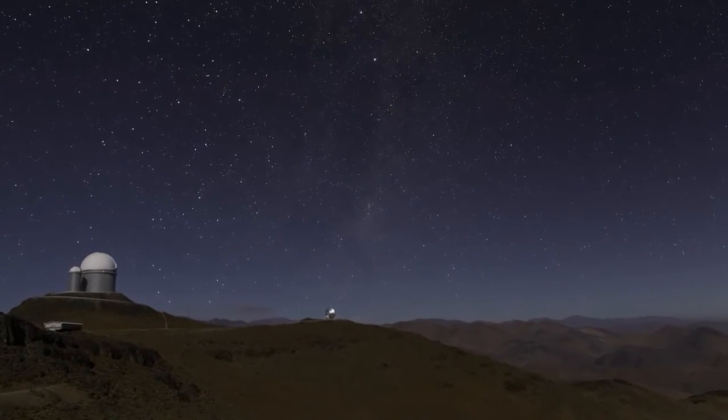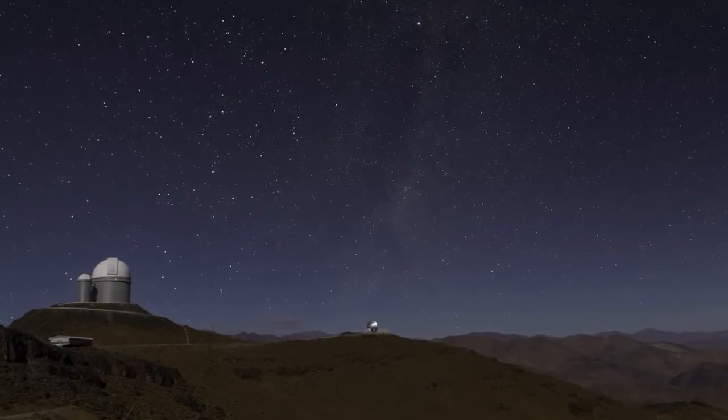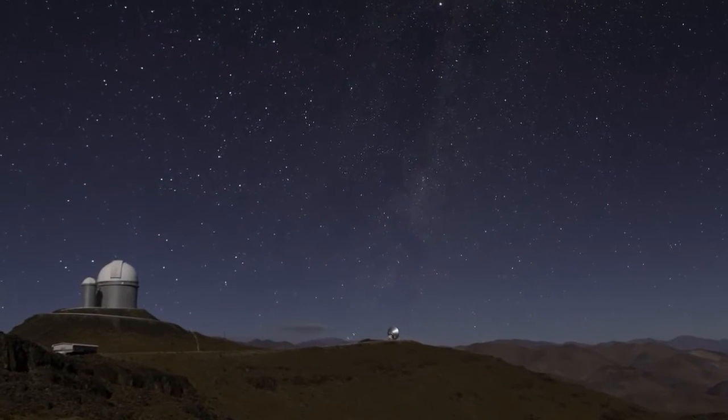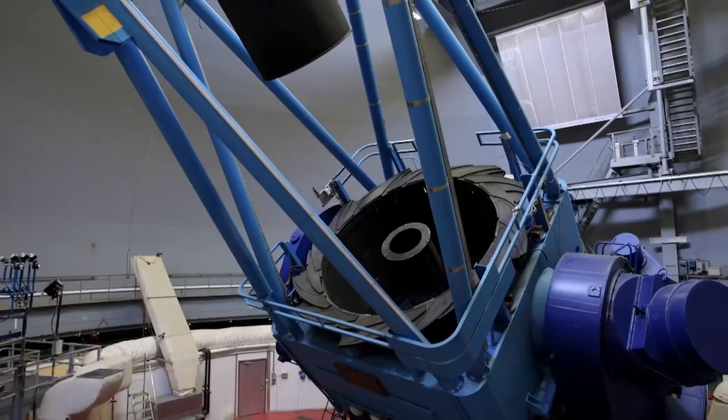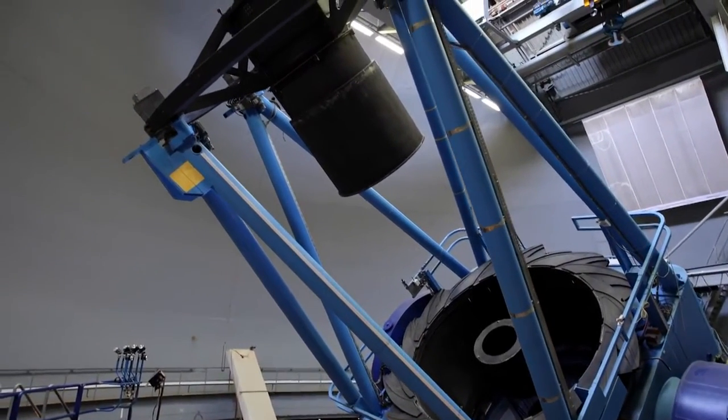The campaign's key observations will be carried out by ESO's High Accuracy Radial Velocity Planet Searcher, or HARPS, which is attached to ESO's 3.6-metre telescope at the La Silla Observatory.